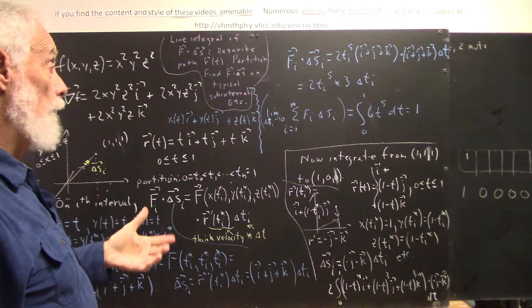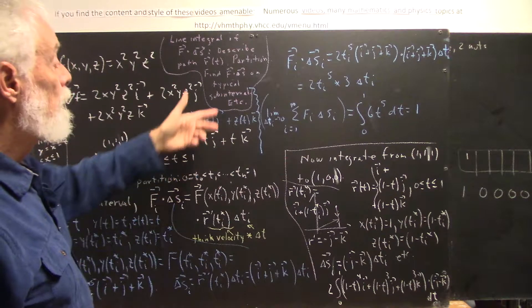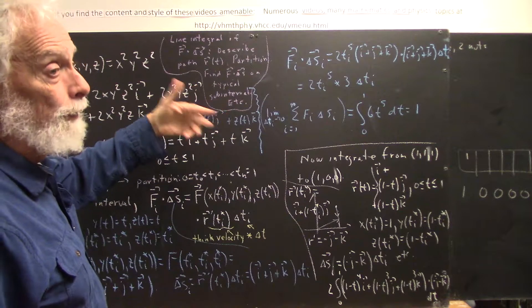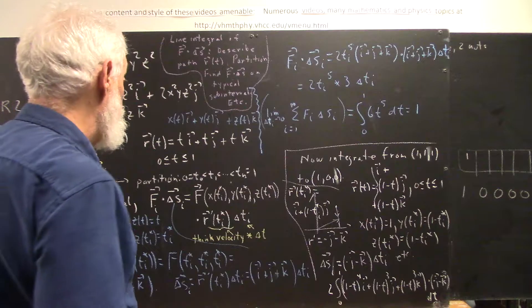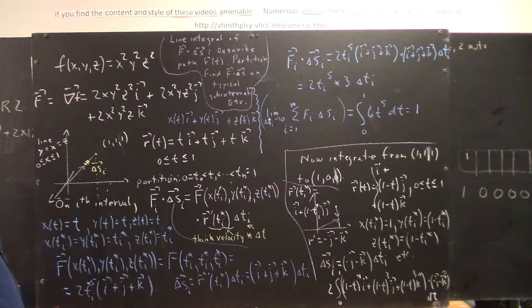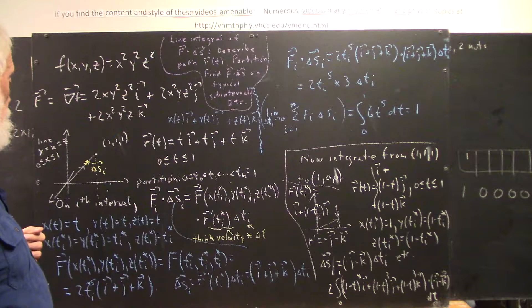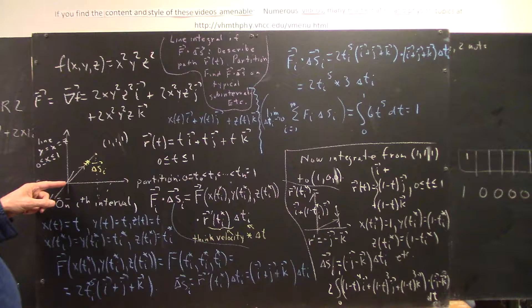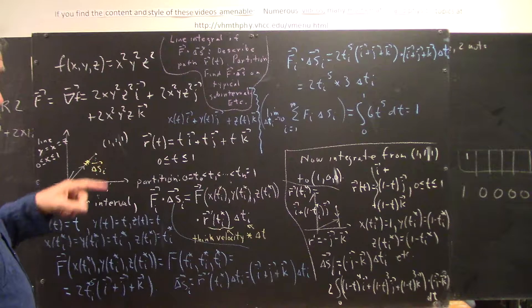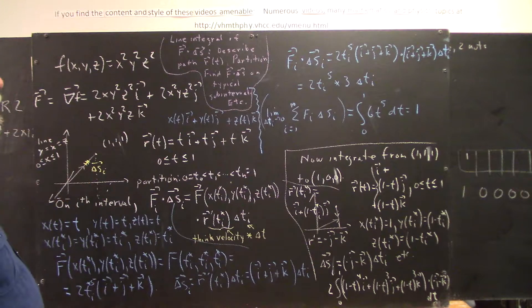We first have to describe our path R of t. Then we have to partition. Then we have to find F dot ΔS on a typical sub-interval of that partition. Then we form a sum — a Riemann sum — we let it approach the integral and we write down and then perform our integral.